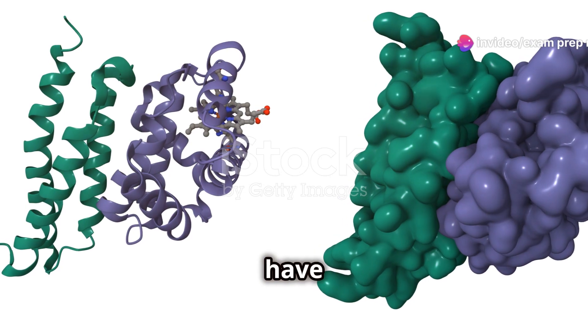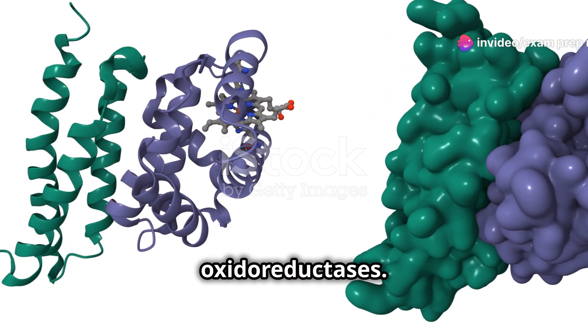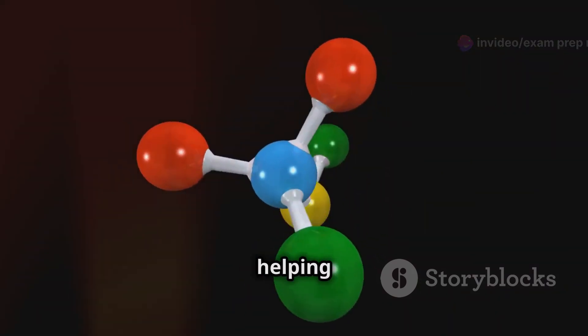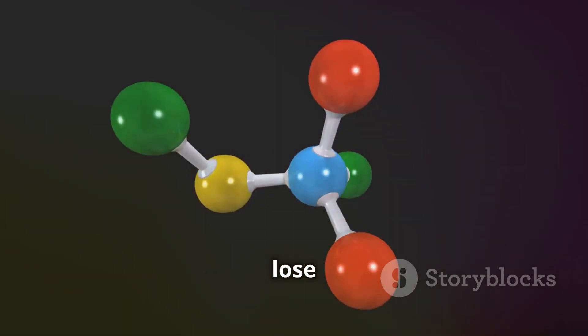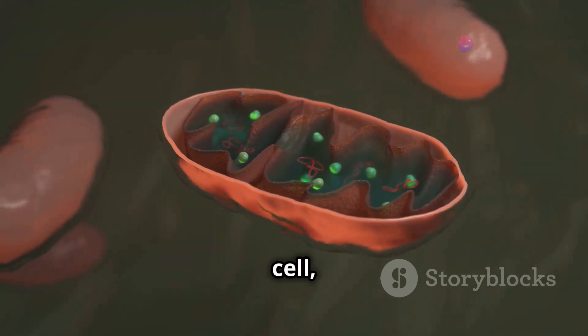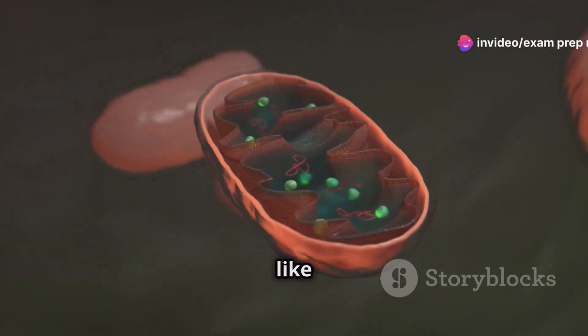First up we have the oxidoreductases. These enzymes are the masters of electron transfer, helping molecules either gain or lose electrons. Think of them as the energy providers of the cell, playing a crucial role in processes like respiration.